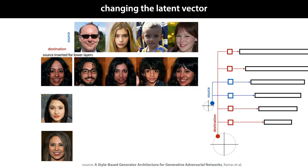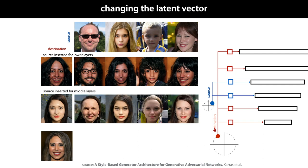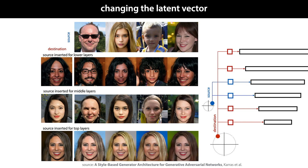As we see, overriding the bottom layer changes things like gender, age, and hair length, but not ethnicity. For the middle layer, the age is largely taken from the destination image, but the ethnicity is now overridden by the source. And finally, for the top layer, only surface details are taken from the source, and most of the basic properties of the face are taken from the destination. This kind of manipulation was done during training as well to ensure that it would lead to faces that fool the discriminator.